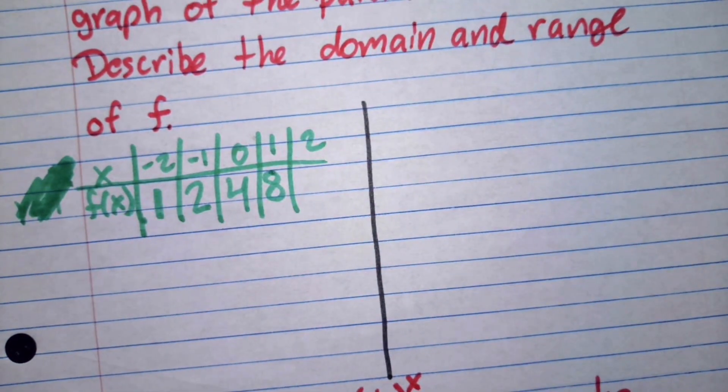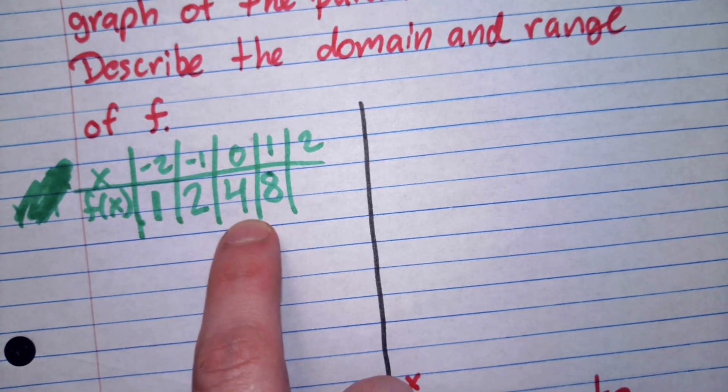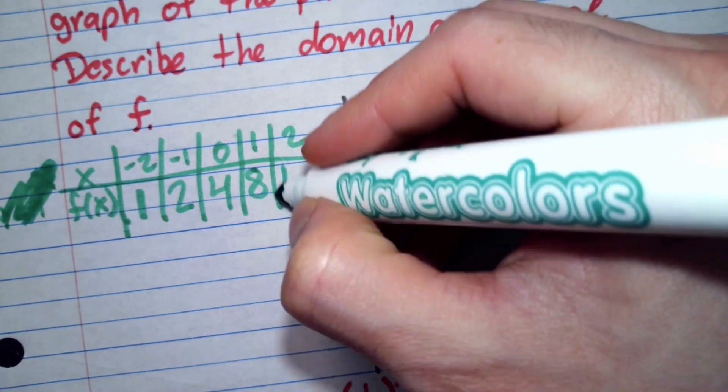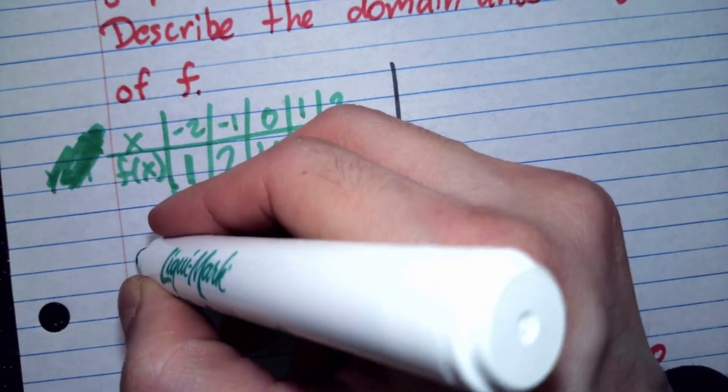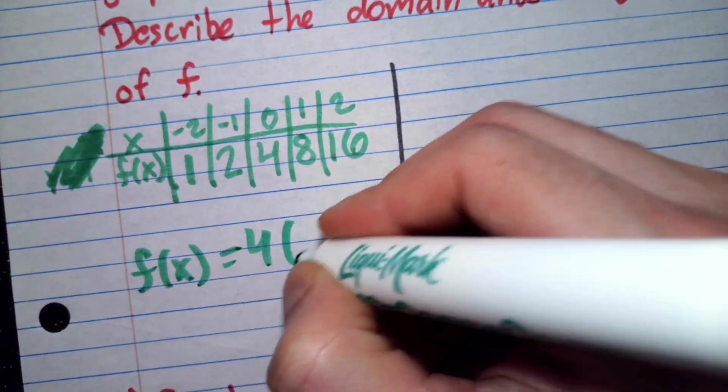And when we know this is an exponential function, we know that to get to the next number, I just have to keep multiplying by 2. So this last value, without having to plug it into my function, I know has to be 16. So we have to remember this table of values corresponds to this function here.